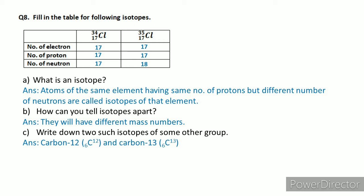From this table we can see what isotopes are: atoms of the same element whose atomic number is the same but mass number is different. Or: atoms whose number of protons is the same but number of neutrons is different. We can tell isotopes apart by their mass number — same atomic number but different mass number. For example, two isotopes of carbon: carbon-12 has atomic number 6 and mass number 12; carbon-13 has atomic number 6 but mass number 13.